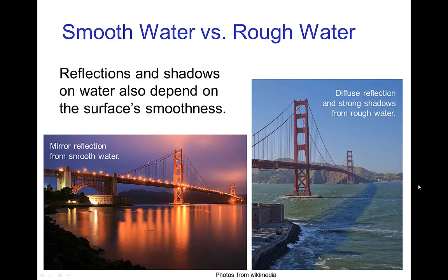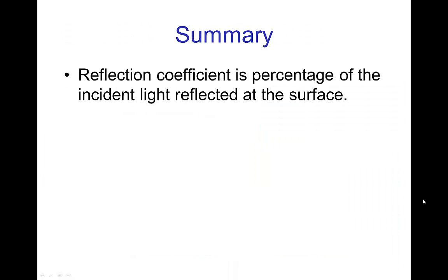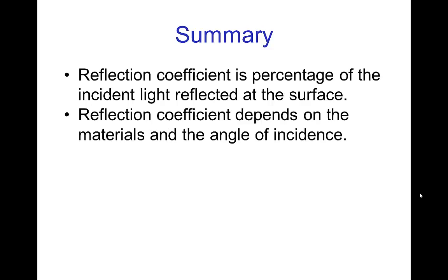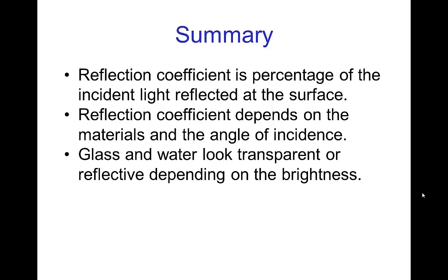The smoothness of the water also affects the reflection and shadows we get. Smoother water tends to give more of a mirror reflection, while choppy water is more of a diffuse reflection with stronger shadows. In summary: the reflection coefficient is the percentage of the incident light reflected at the surface. It depends on the materials of the interface and the angle of incidence. Glass and water look transparent or reflective depending on the relative brightness on each side.